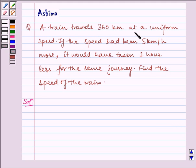A train travels 360 km at a uniform speed. If the speed had been 5 km per hour more, it would have taken 1 hour less for the same journey. Find the speed of the train.